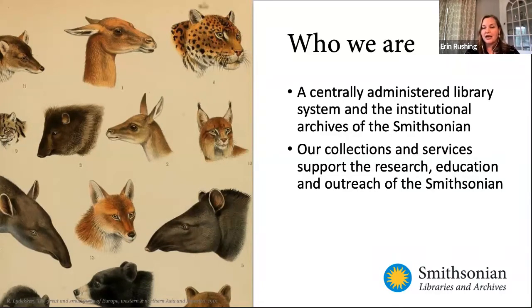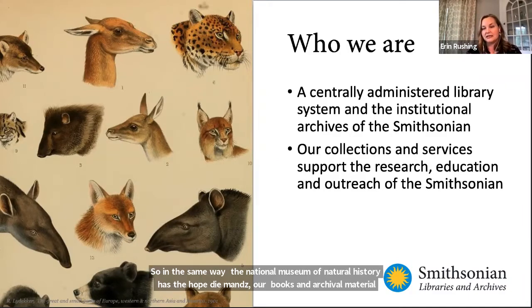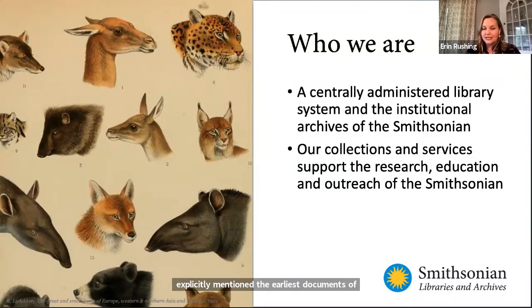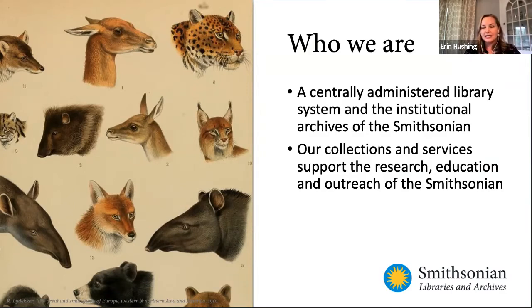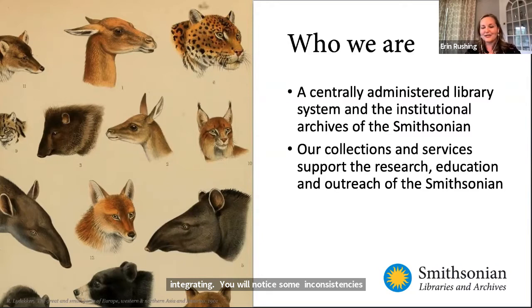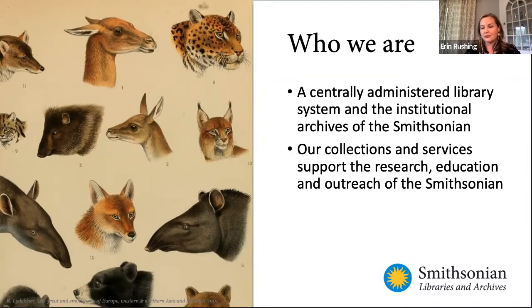Establishing both a library and an archives was explicitly mentioned in the earliest documents of the institution. Since 1846, the institution's librarians and archivists have preserved our books, research, and stories. Just recently in December of 2020, the Smithsonian Libraries and the Smithsonian Institution Archives joined to become one unit. We're still in the process of integrating, and our presentation will largely focus on the library resources we have available to you.